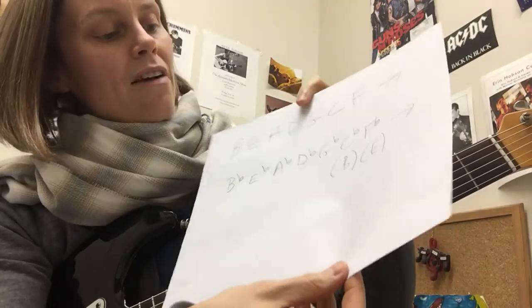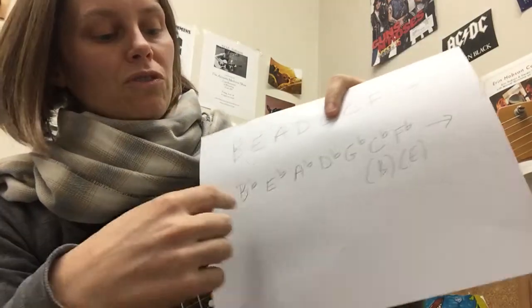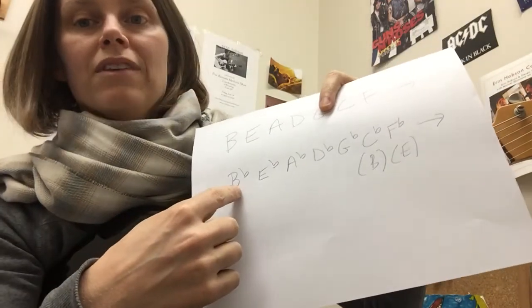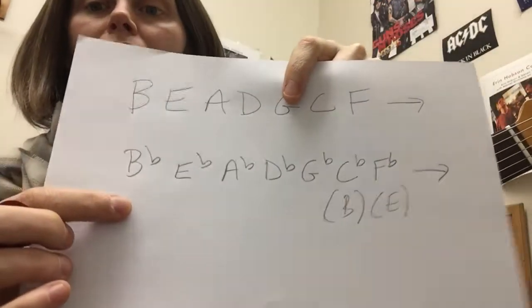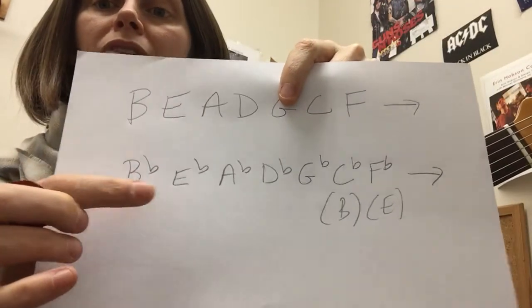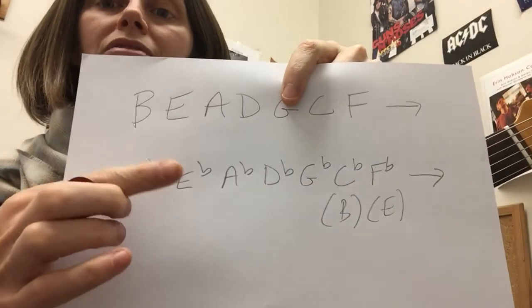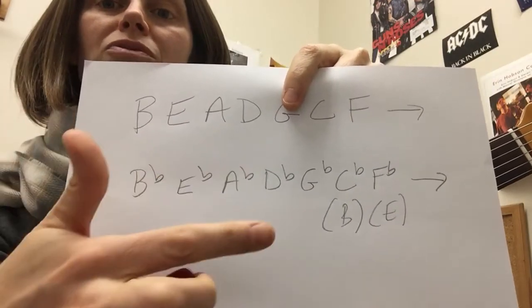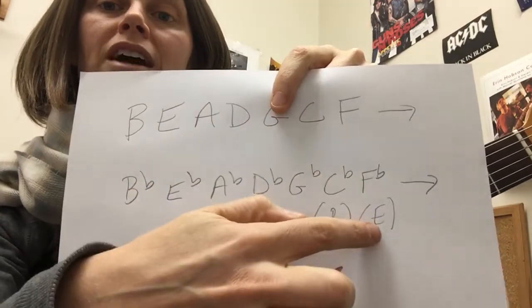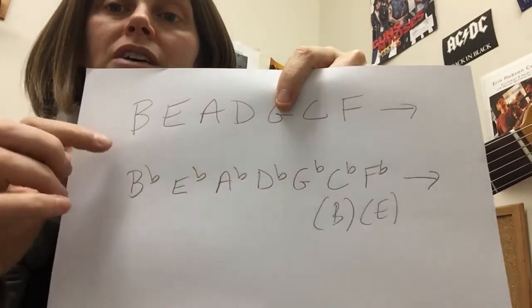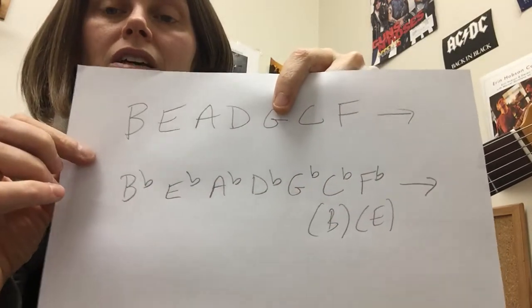After F, you go to B flat, and then you just go through BEADGCF with your flat notes — B flat, E flat, A flat, D flat, G flat. C flat is the same note as B, F flat is the same note as E.